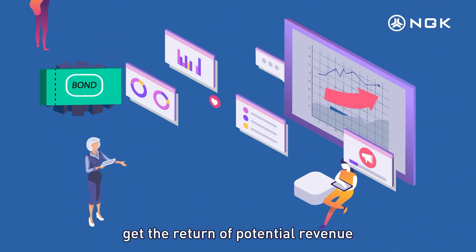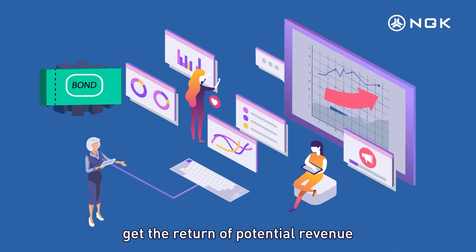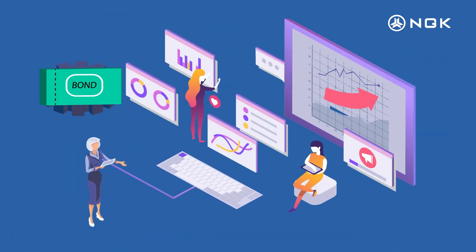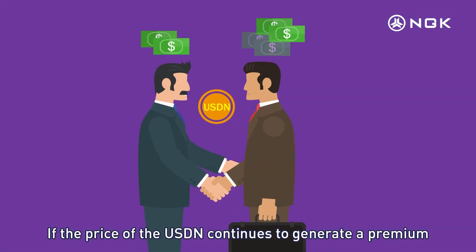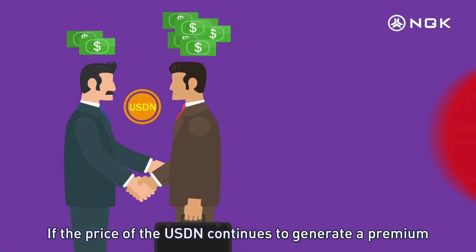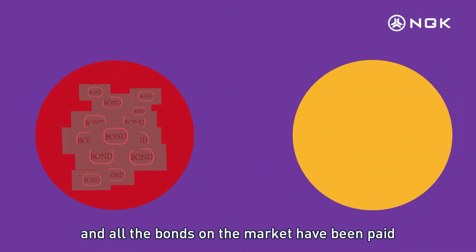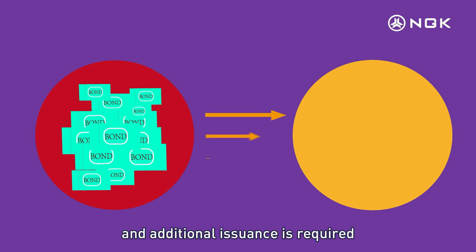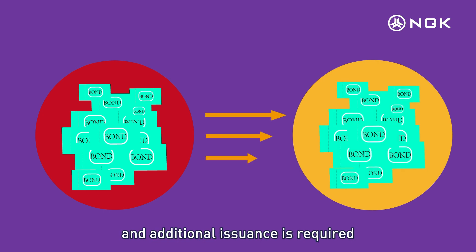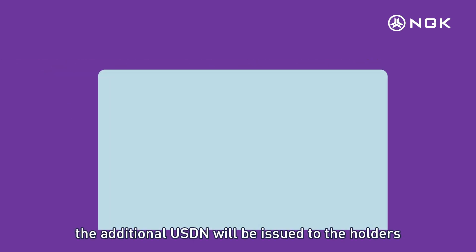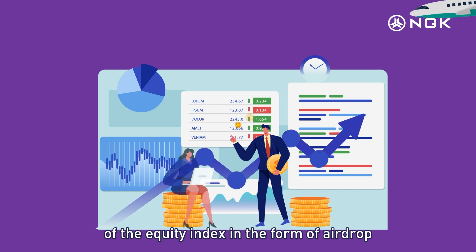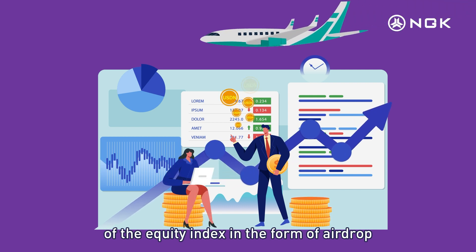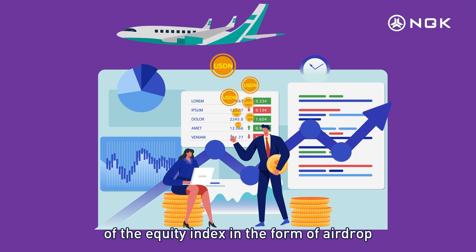The premium part will issue new USDN. The newly generated USDN will first settle the market's bond vouchers, because investors who bought bonds at a lower price than the USDN price receive a potential revenue return. If the USDN price continues to generate a premium and all bonds have been paid, additional USDN will be issued to equity index holders in the form of an airdrop.